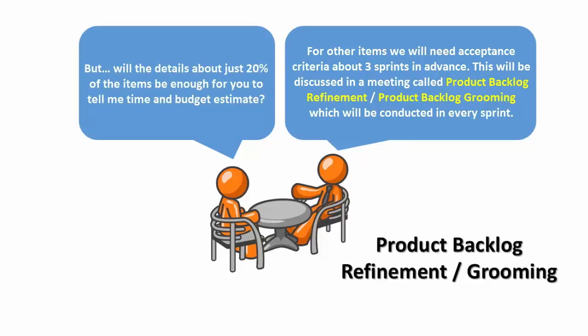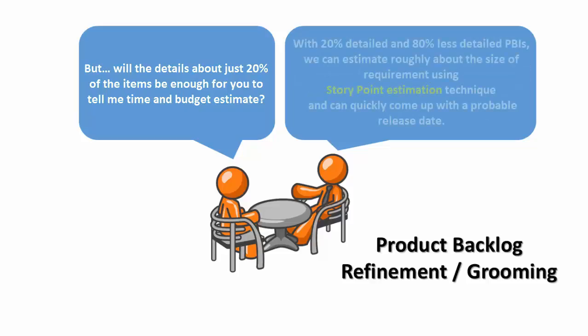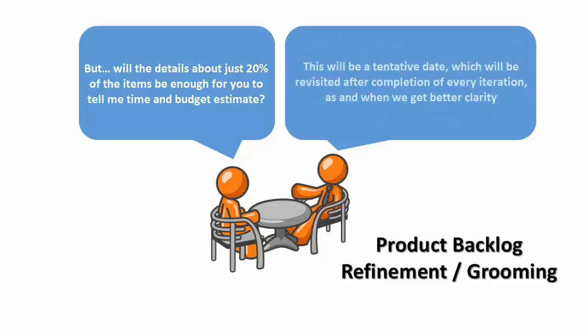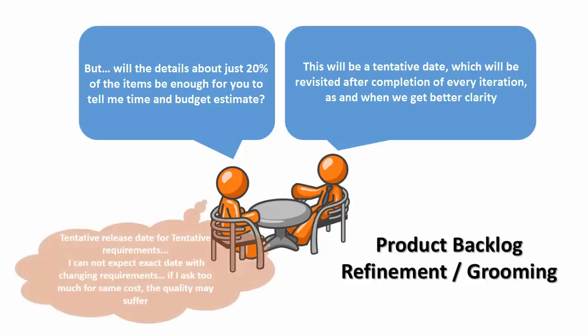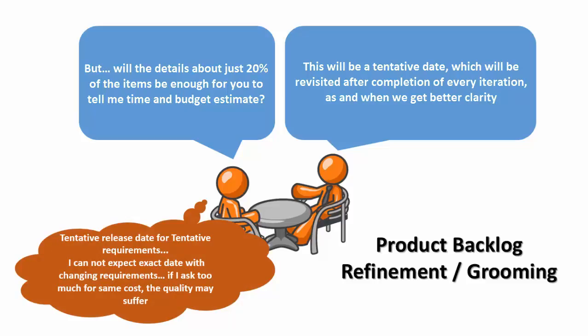But will details about just 20% of the items be enough for you to give me a time and budget estimate? With 20% detailed and 80% less detailed PBIs, we can estimate roughly the size of requirements using the story point estimation technique and quickly come up with a probable release date. This will be a tentative date revisited after every iteration as we get better clarity.